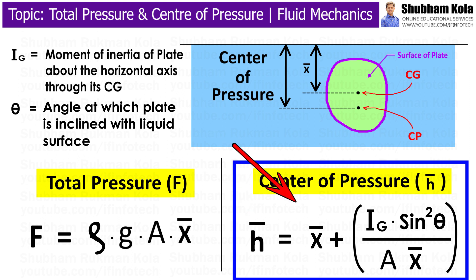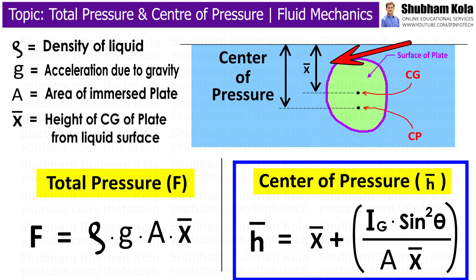H-bar is given by this formula, where Ig is the moment of inertia of the immersed surface about the horizontal axis through its center of gravity. X-bar is the height of the center of gravity of the immersed surface from the liquid surface, and capital A is the area of the immersed surface.